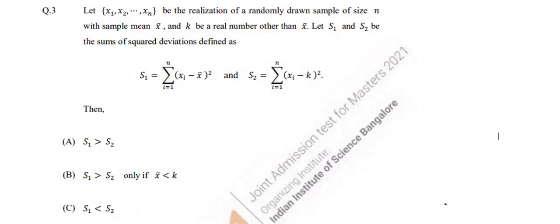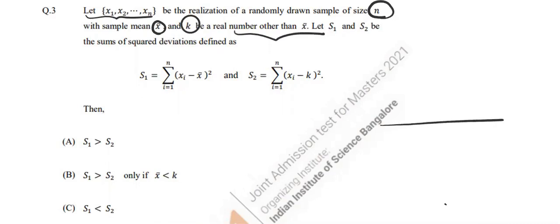This is question number three from the IAT JAM paper. You have a sequence of numbers x1, x2, x3, and so on, where the sample size is n. The mean is x̄, and k is any real number other than x̄.